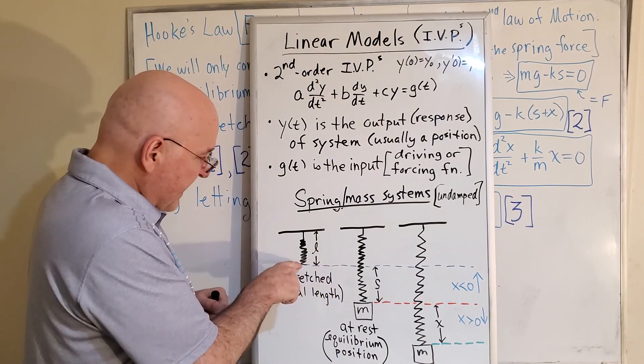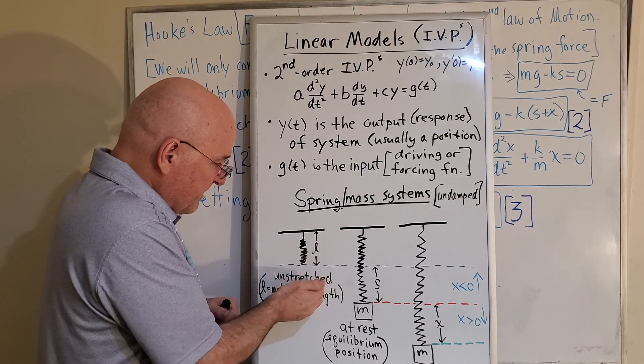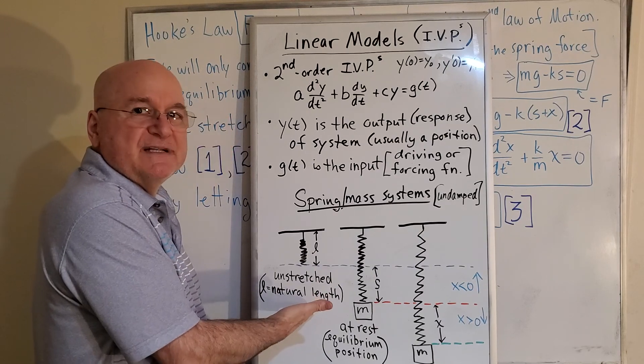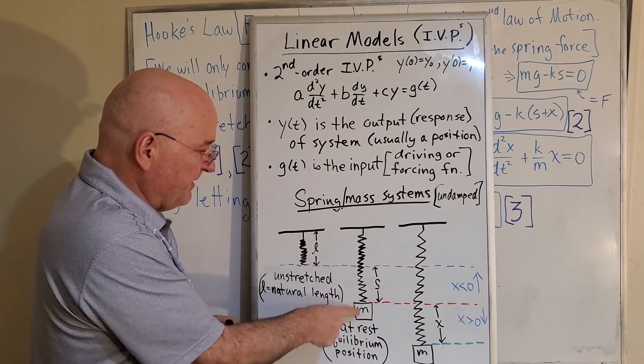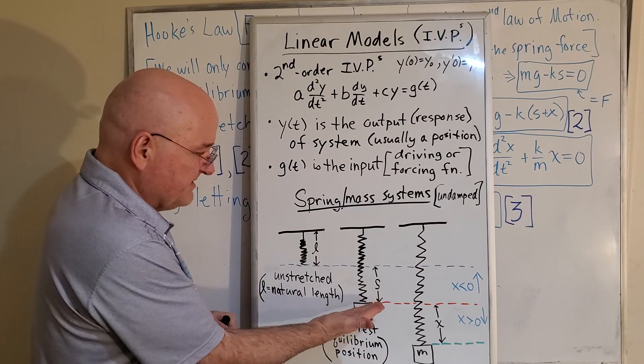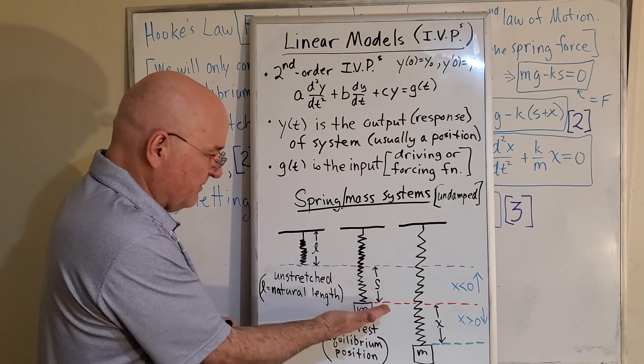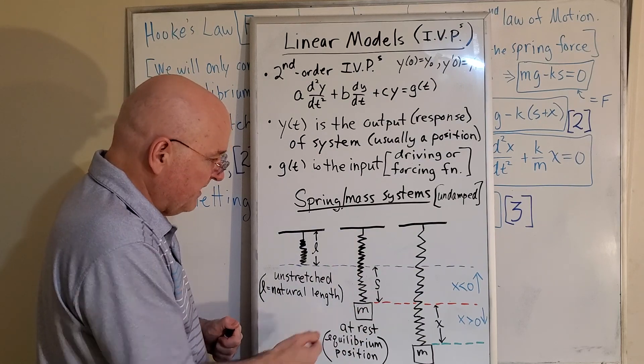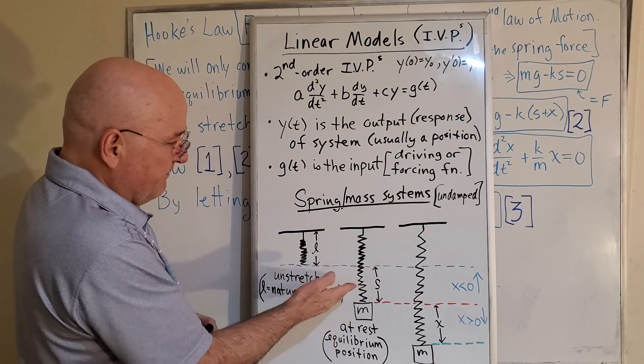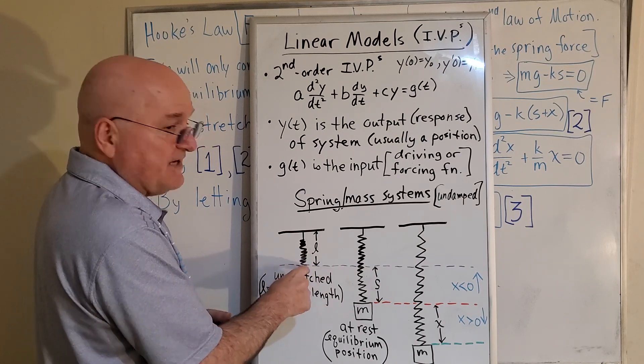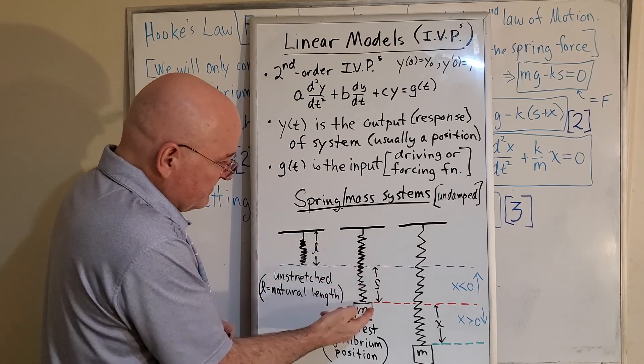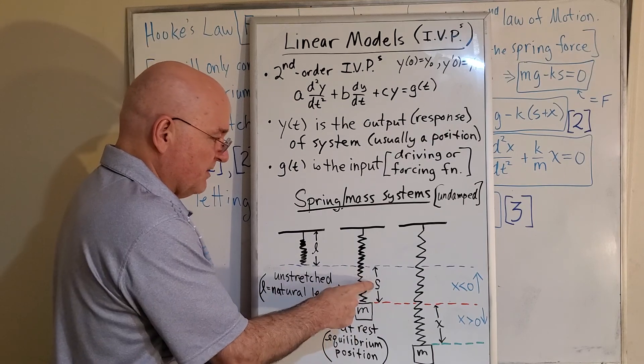Then we attach a mass to the end of it and let it come down, and wherever it stops, comes to a complete stop, this is an equilibrium position. So it's at rest, it's not moving up and down, it's completely at rest. And the distance that it moved from the unstretched natural length down to this equilibrium is what we're going to call S.